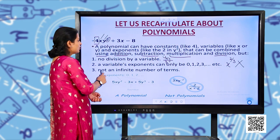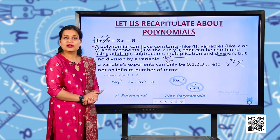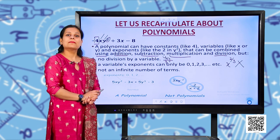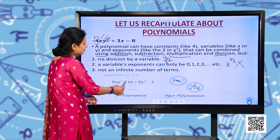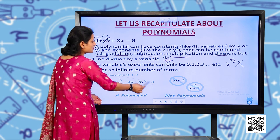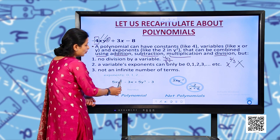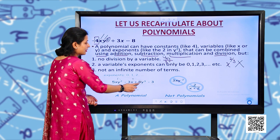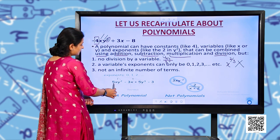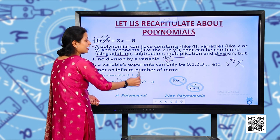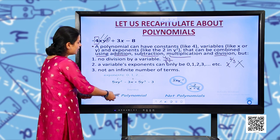Third: it must contain a finite number of terms, combined using addition, subtraction, multiplication, and division. Here is an example: 5xy² − 3x + 5y³ − 3. Is it a polynomial? All the exponents are 2, 1, 1, and 3 — whole numbers. The four terms are combined by subtraction and addition. So yes, it is a polynomial.